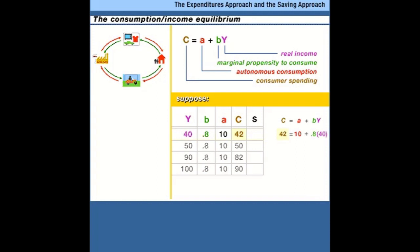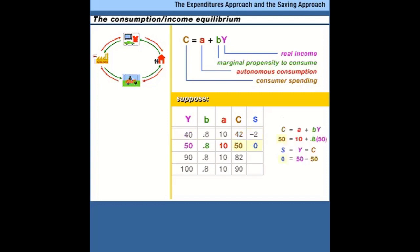Suppose income is higher, at 50. In this case, autonomous consumption plus 0.8 times 50 is 40, plus 10 gives total consumer spending of 50, which is exactly equal to income, so savings equals zero. If income were 90, then 90 times 0.8 is 72, plus 10 is total consumer spending of 82 — income is greater than consumption, so savings equals 8. And if income is 100, then 100 times 0.8 is 80, plus 10 gives total consumption of 90, leaving savings equal to 10.